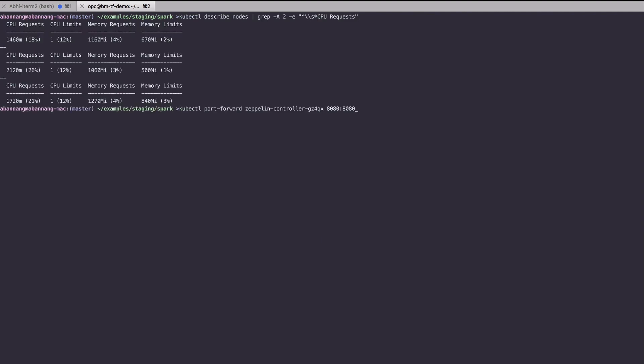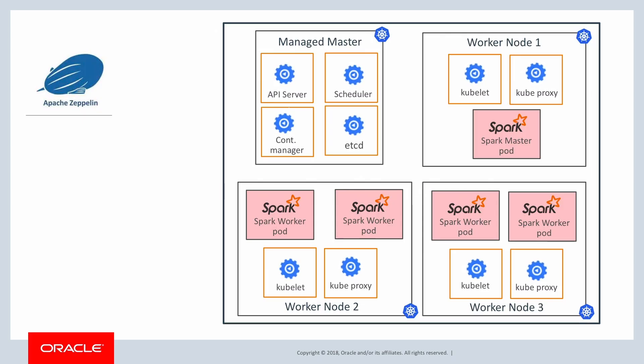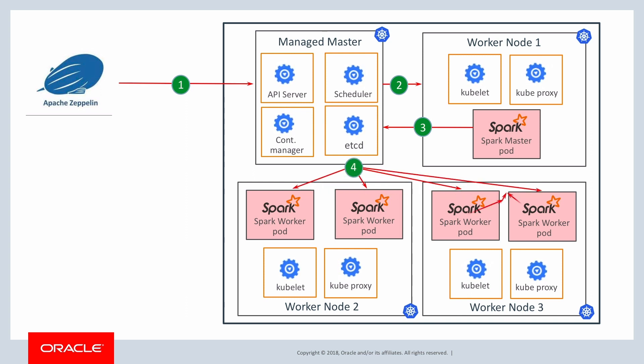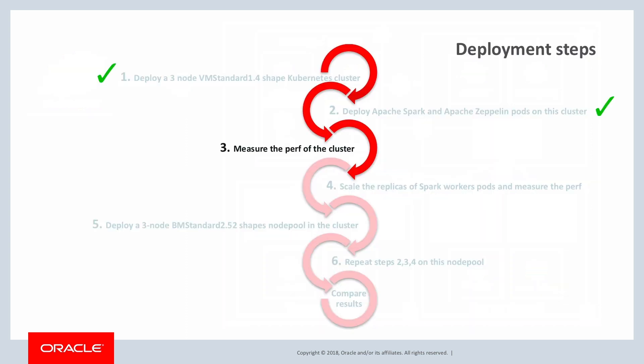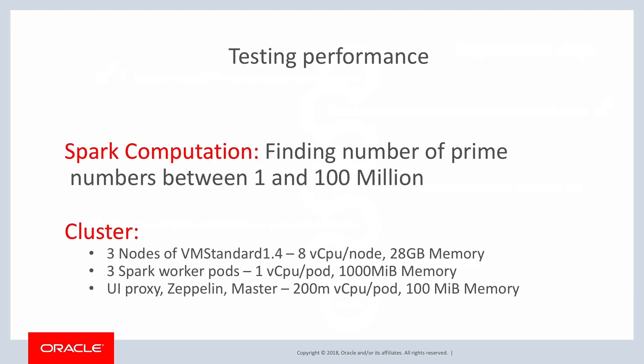This is what the CPU and memory allocations for this cluster look like. We have created a three-node Kubernetes cluster with one pod each of Spark Master and Zeppelin, and three replicas of Spark worker pods. The Spark computation we will be running involves finding the number of prime numbers in a dataset of natural numbers from 1 to 100 million. We have allocated 1 vCPU and 1000 MiB of memory per Spark worker pod, and 200 MiB CPU and 100 MiB of memory per pod for Spark Master and Zeppelin. These allocations will remain the same across all tests.